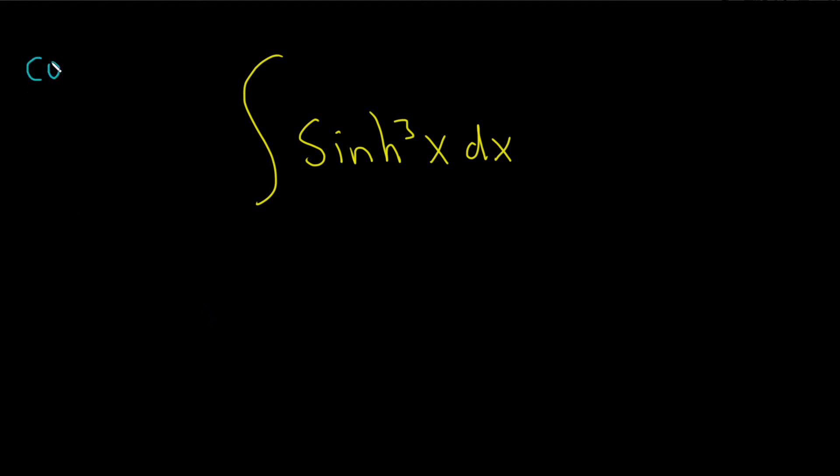I'm thinking maybe this one. If we have cosh squared of x minus sinh squared of x, this is equal to 1. Okay, so in other words,